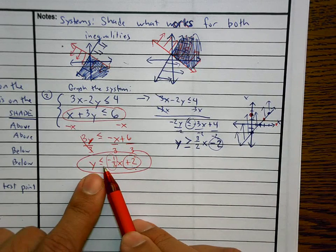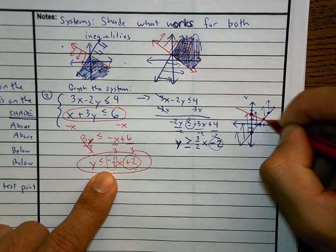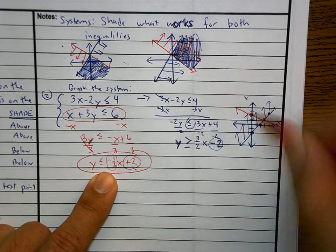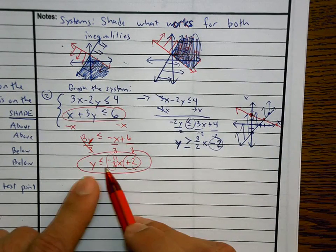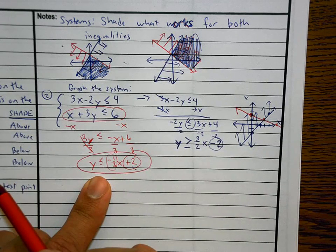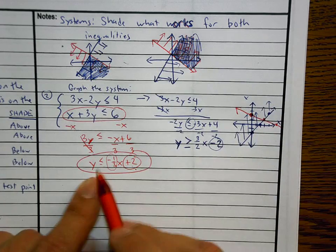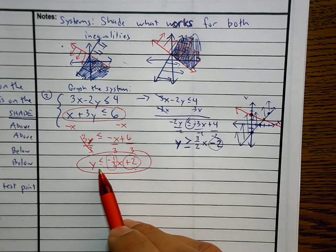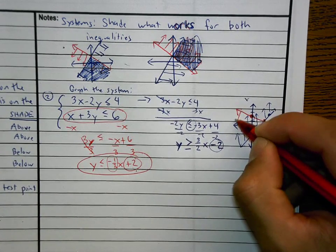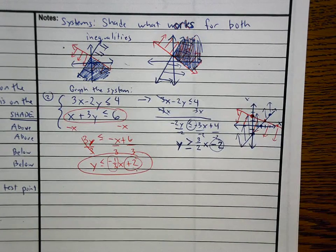Solid or dotted? Solid. Now since the Y is on the left and the X is on the right, above or below? Oh, we don't, below. So below the red line, below the red line, below the red line. And then you're going to have to make a decision about what you're going to shade.